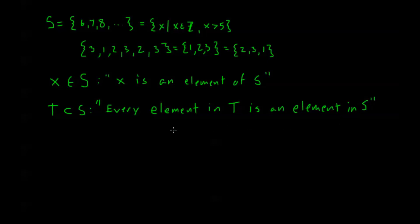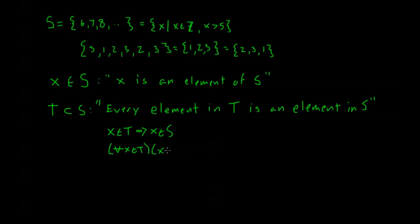If you've watched some of the previous videos on quantifiers, I can write this as: X in T implies that X is in S. Now this isn't a biconditional, because I could have elements in S that are not in T. T being a subset doesn't mean it has everything in S — it just means that S has everything in T. I could also write this with quantifiers: for every X in T, X is in S.